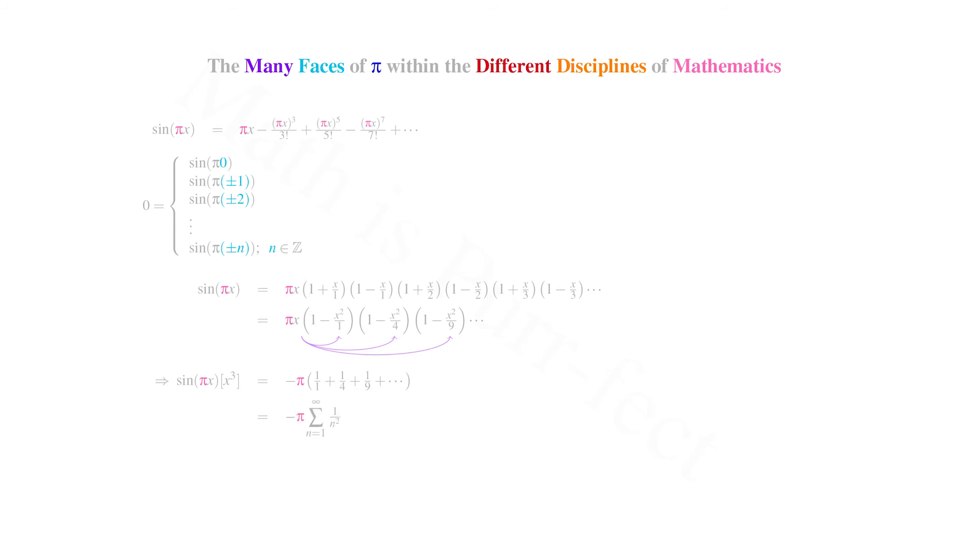This gives us negative pi times the sum as the index counts from 1 to infinity of 1 over n squared. But this sum is the coefficient of x cubed in this series, hence is equivalent to negative pi cubed over 3 factorial, as seen up here circled in yellow in the original expression. Dividing by negative pi gives us that the series over n of 1 over n squared is equivalent to pi squared over 6, because 3 factorial is of course 6.